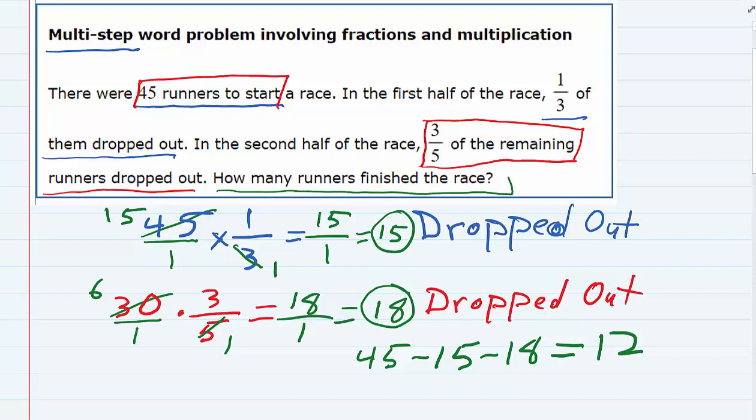And we look back and make sure, yes, we were asked how many actually finished the race. So we found the fraction that dropped out in the first half, we found the fraction that dropped out in the second half, and by subtracting those, we now know how many runners were left.